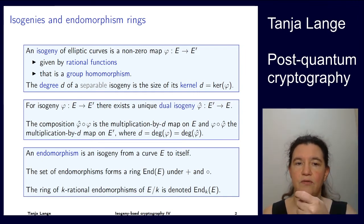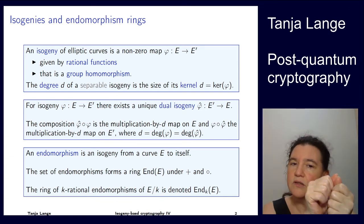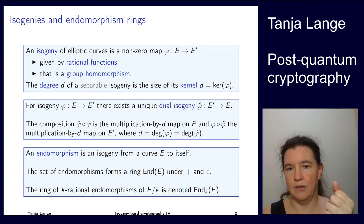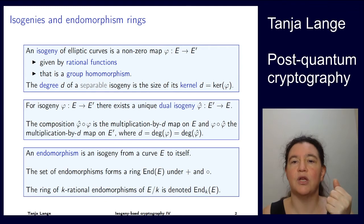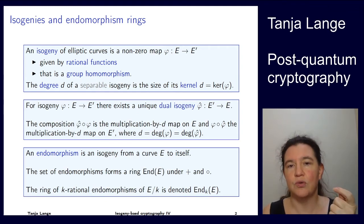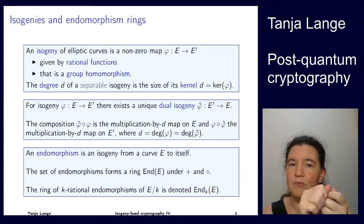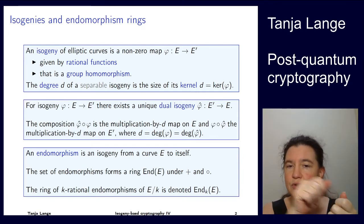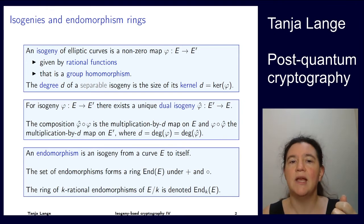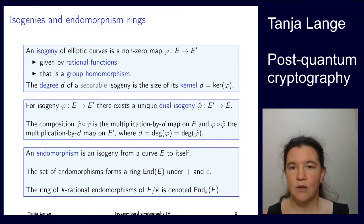One interesting thing is that when you're looking at an isogeny from E to E prime, there always exists one isogeny to go back. This is unique when we're assuming everything modulo isomorphisms — there are many isomorphisms running around, but after that this map is unique. When you first go from E to E prime using phi, and then go from E prime to E using phi-hat, the dual isogeny, what you've done on the curve E is a multiplication-by-D map.